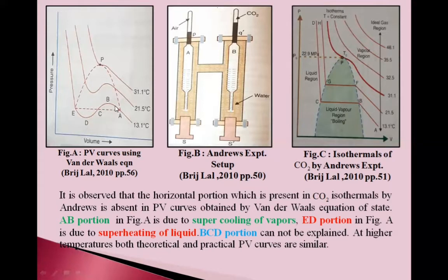Here pressure increasing, volume is decreasing. Here also pressure increasing and volume is decreasing. But along BCD, we see pressure decreasing and volume also decreasing. This is not acceptable. The curve is same for 21.5 degrees Celsius.